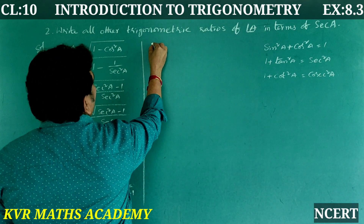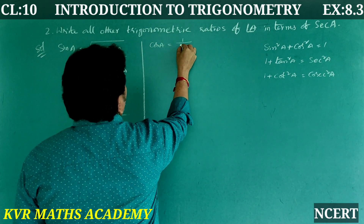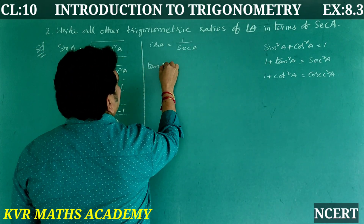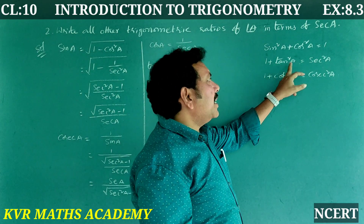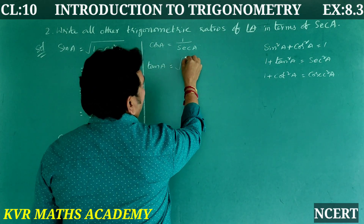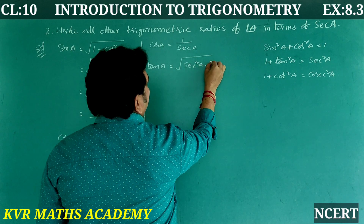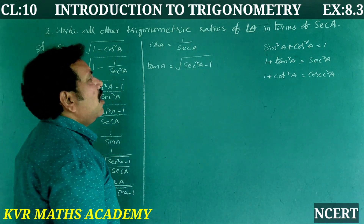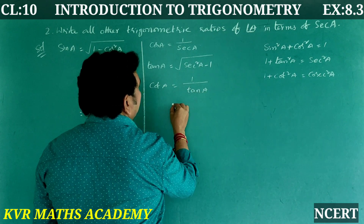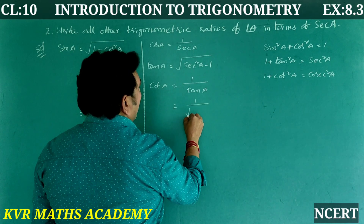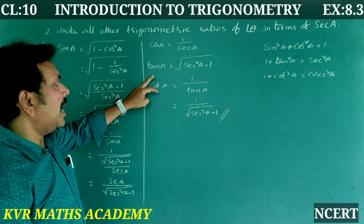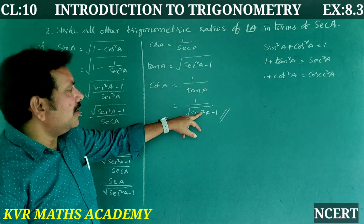Cos A is simply the reciprocal of sec A, so cos A = 1/sec A. For tan A: from 1 + tan²A = sec²A, we get tan²A = sec²A − 1, so tan A = √(sec²A − 1). Finally, cot A = 1/tan A = 1/√(sec²A − 1). So all ratios — sin A, cosec A, cos A, tan A, and cot A — are now expressed in terms of sec A.